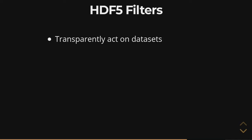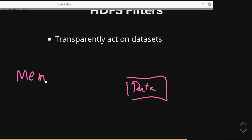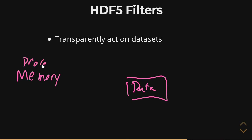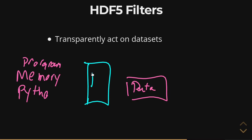Filters are this layer that sits between your actual data and your memory — your program, if this is like Python or something — that's trying to access this data. The filters are basically this thing that sits in between and processes the data you're trying to write or read, and it works in both directions.